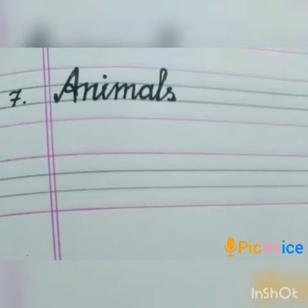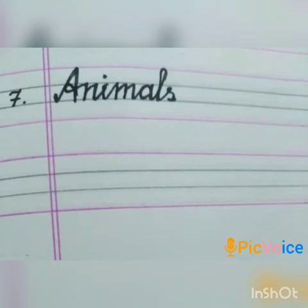Seventh one: Animals. Animals means 'vilangu kal' — creatures like lion, tiger, and elephant. The spelling is A-N-I-M-A-L-S. Animals.